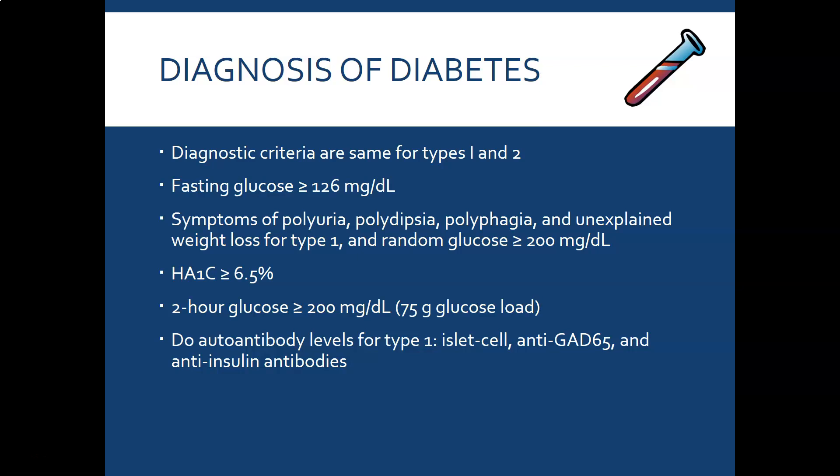The diagnostic criteria are the same for Type 1 and Type 2: a fasting glucose above 126 mg/dL; symptoms of polyuria (frequent urination), polydipsia (excessive thirst), polyphagia (excessive hunger), and in Type 1 unexplained weight loss; a random glucose greater than 200 mg/dL taken at any time; an A1C greater than or equal to 6.5%; or a two-hour glucose greater than 200 mg/dL after a 75-gram glucose load.